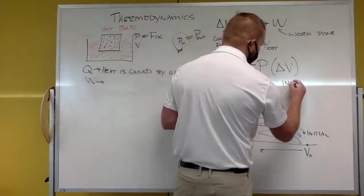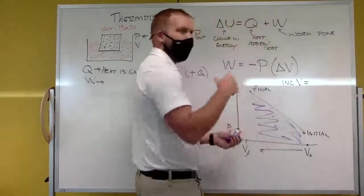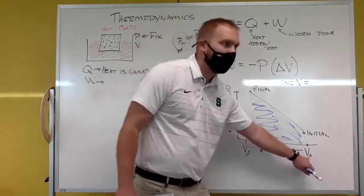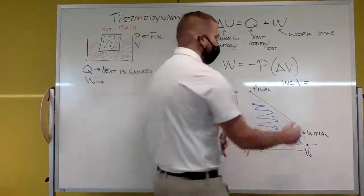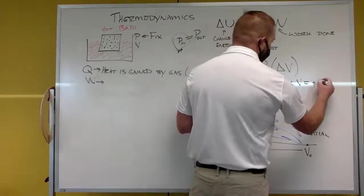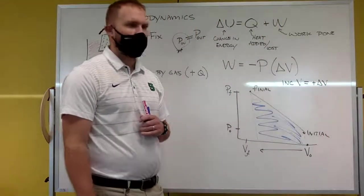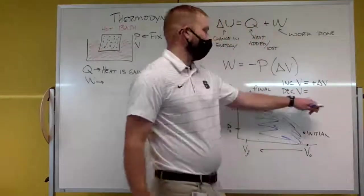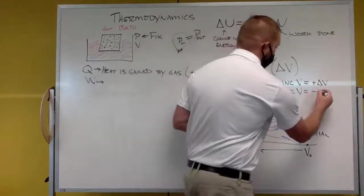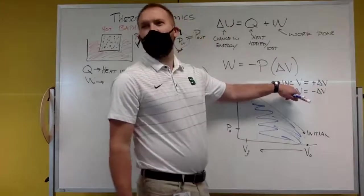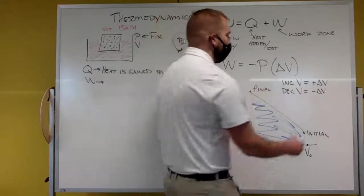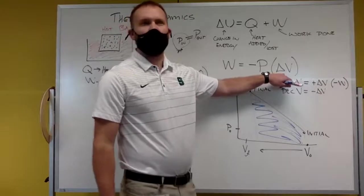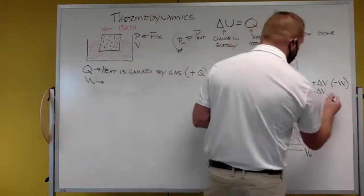An increase in volume is final minus initial — say, 10 minus 5 — that is a positive delta V. A decreasing volume gives a negative delta V. If I have an increasing volume, that's negative work, because it's negative P times a positive delta V. If it's decreasing volume, that's positive work.